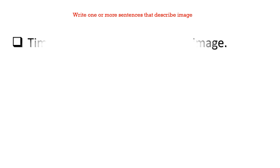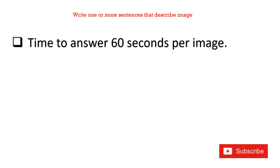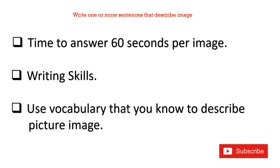For 'write one or more sentences that describe a picture image,' you have 60 seconds per image. They will check your writing skills. If you do not know anything about that picture image in the examination, please don't panic. You can use vocabulary that you know to describe the picture image so you will not lose your marks.